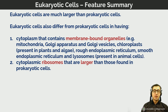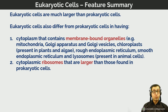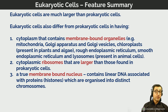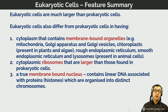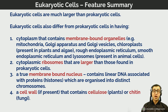In prokaryotes, the DNA floats as a circular loop in the central portion of the cytoplasm without a nuclear membrane around it. The cell wall in eukaryotic plant cells is made of cellulose, and in fungi it is made of chitin — very different materials from the prokaryotic cell wall. In bacteria and archaea, the cell wall is made of a glycoprotein called murein.